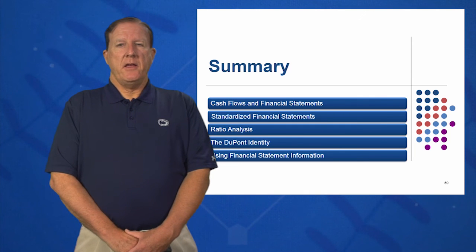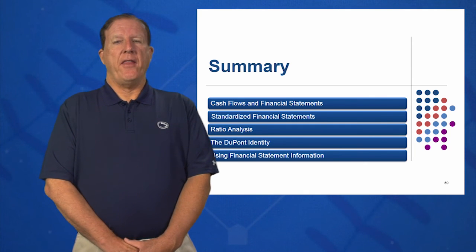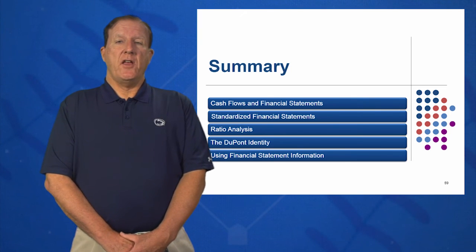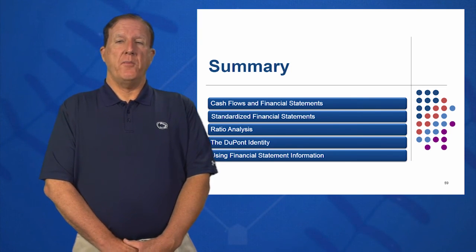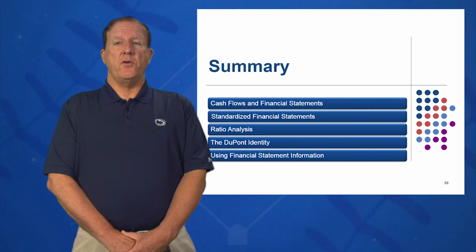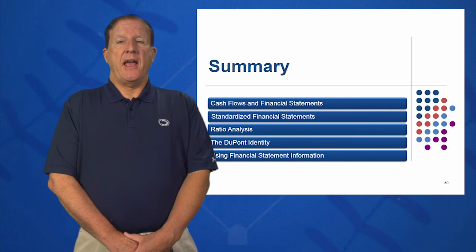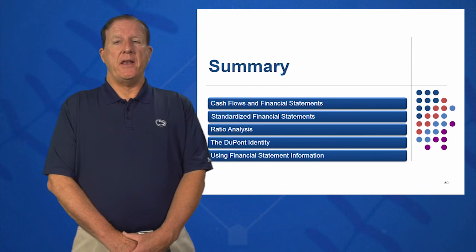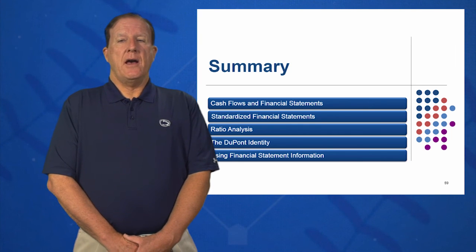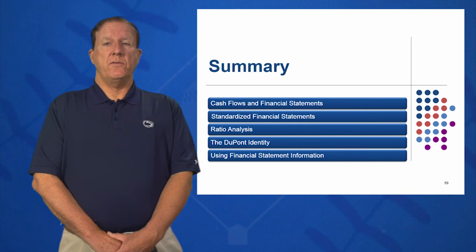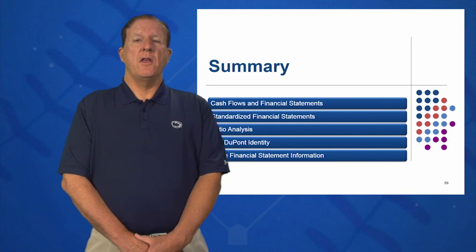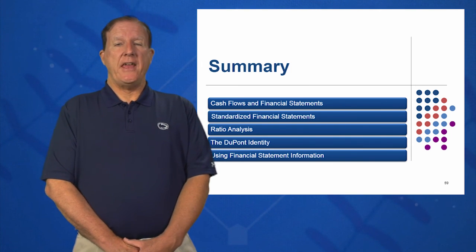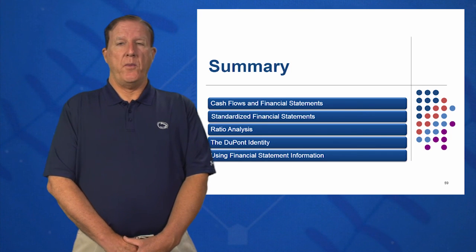In summary, in Session 3 you should have gotten five key learning objectives. First, cash flows and the importance of cash flows relative to our other financial statements. Second, standardizing financial statements — how to standardize an income statement and a balance sheet. Third, you should know the key ratios used across industries around the world in their five key categories.